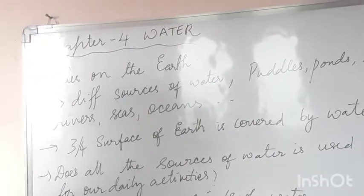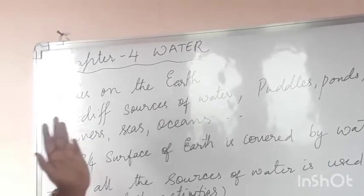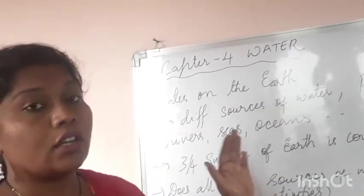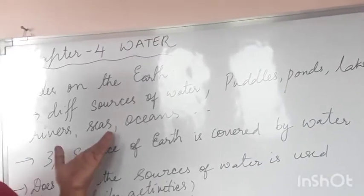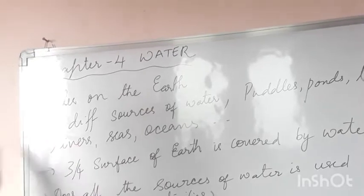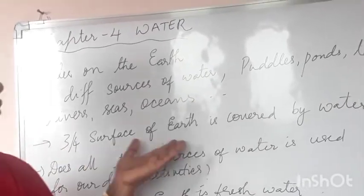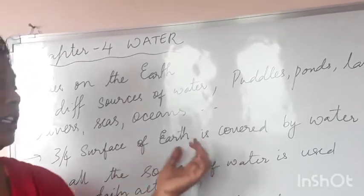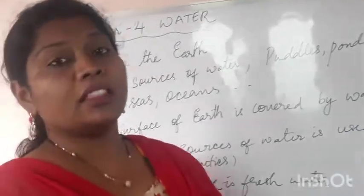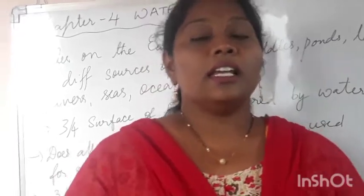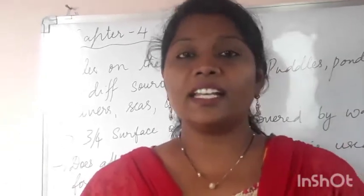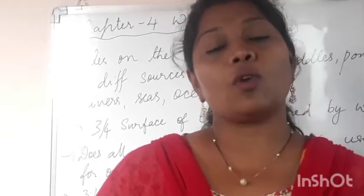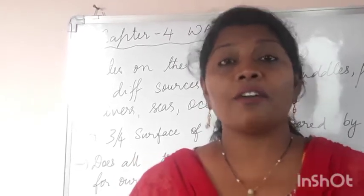Water on the earth: there are different sources of water on the earth — puddles, ponds, lakes, rivers, seas and oceans. As I have already said, three-fourths of the earth's surface is covered by water. But not all that water is used for our daily activities. The water available in rivers, ponds, bore wells, or wells is tasty or sweet in nature — we drink such water or use it for different purposes. Such water is called fresh water.